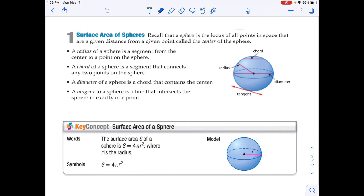Surface Area of Spheres. Recall that a sphere is the locus of all points in space that are a given distance from a given point called the center of the sphere. So it's very similar to the idea of a circle, except now it is in 3D space. A radius of a sphere is a segment from the center to a point on the sphere. Notice here it is labeled on this sphere, but it could come out this way, it could go out this way. There's so many options.